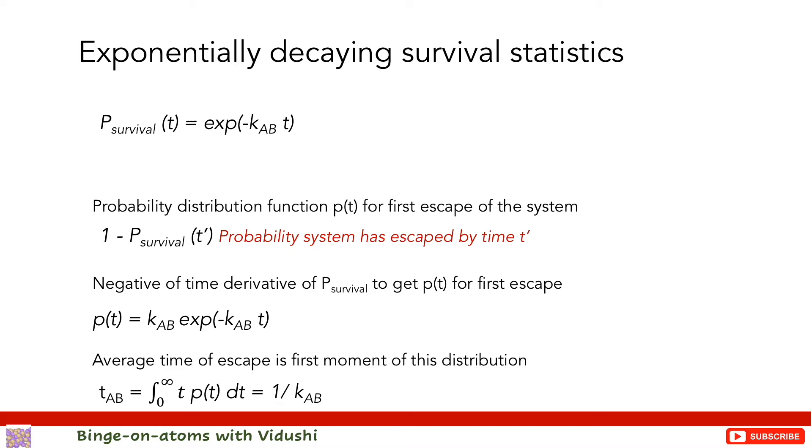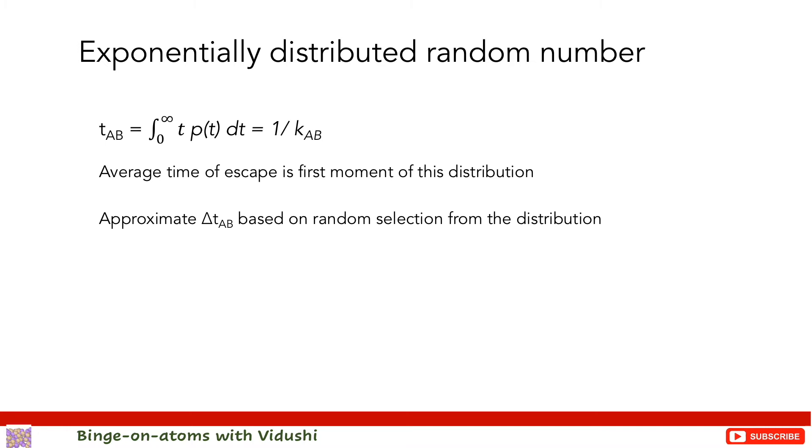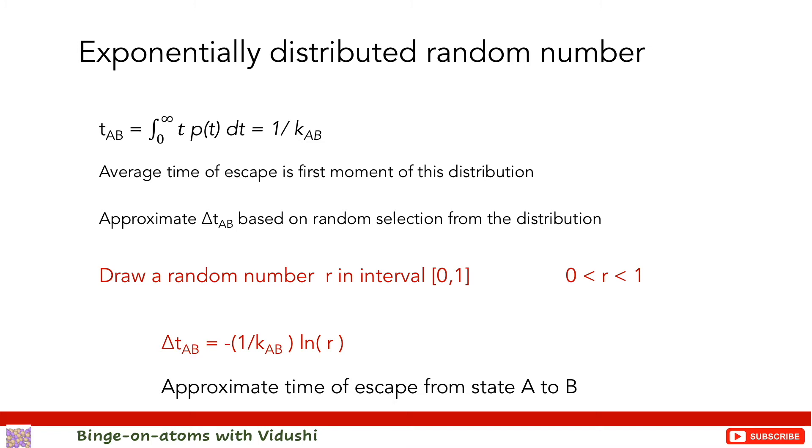For each time the system is in state A, we need to approximate delta TAB based on random selection from this distribution. For this we choose a random number R between 0 and 1. This gives us delta TAB, the approximate time of escape from state A to B as minus 1 by rate constant KAB into ln R. So first we got the distribution of average time of escape, and then out of that distribution we picked out randomly a time span which system will take to make one jump from state A to state B in the present hopping event.